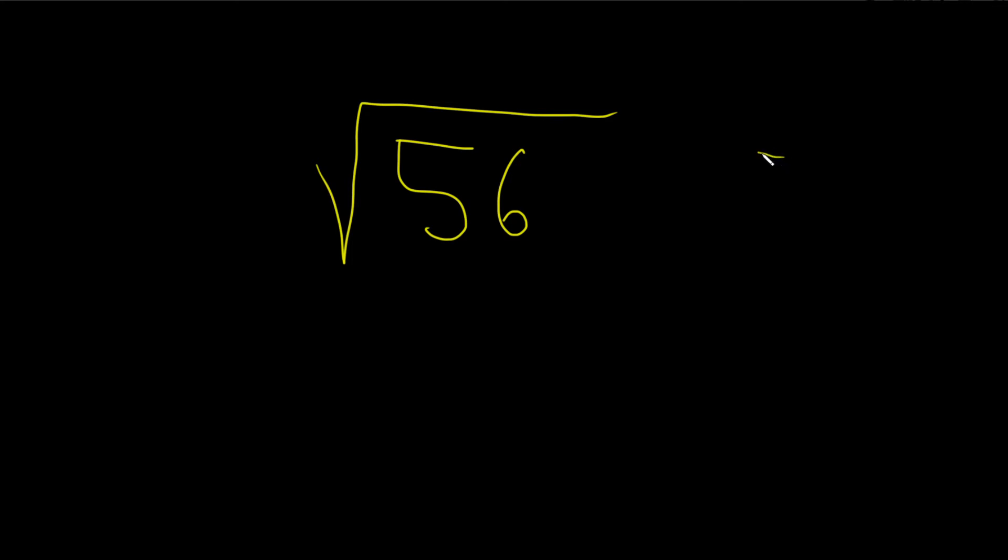Sometimes it's not so obvious. So what you can do is make a little factor tree. A really easy way to factor 56 is to realize that it's 2 times 28. And then you can factor 28 as 2 times 14.